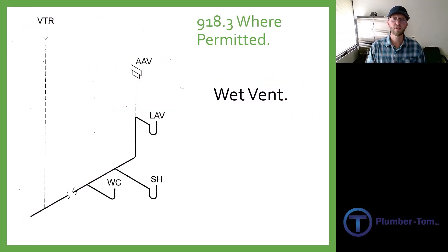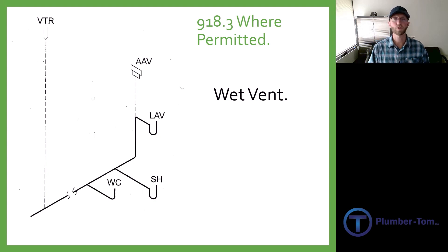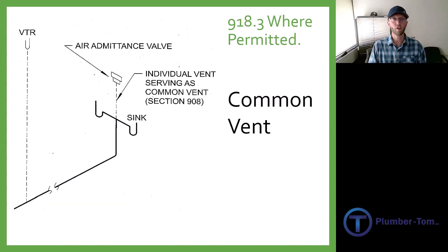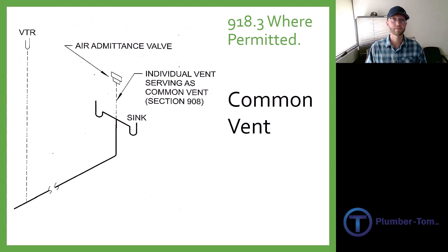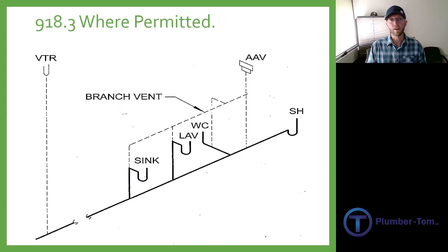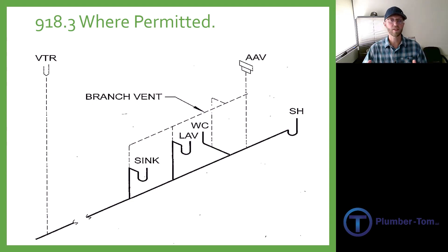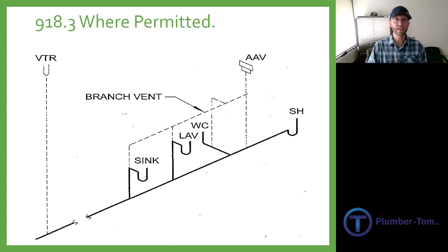Here we have an air admittance valve being used to wet vent a bathroom group. An air admittance valve can also be used in a common vent scenario. You can use an air admittance valve in a circuit. Air admittance valves can also be used for vents that have been branched together — sinks, toilets, showers, the whole bathroom group being piped together with the auto vent serving all of those.